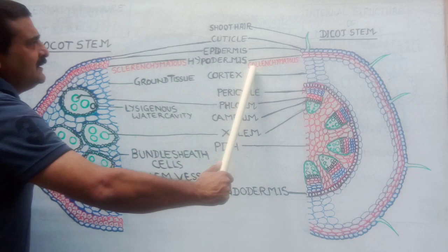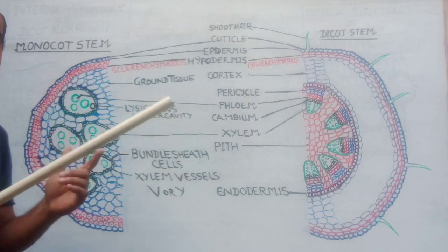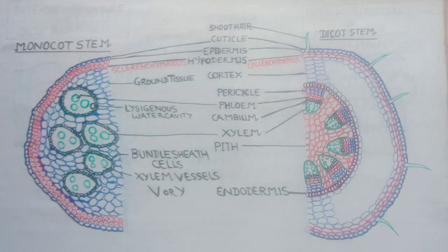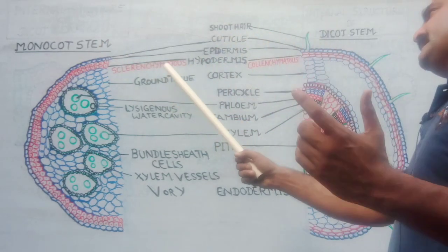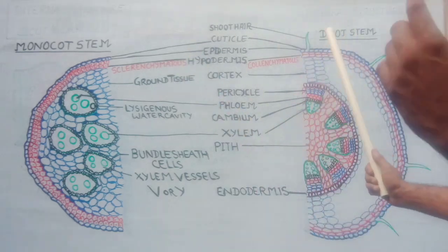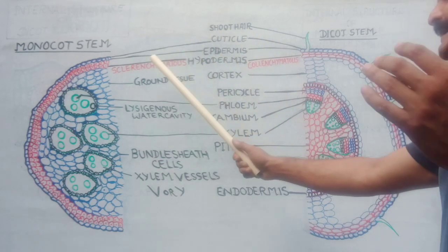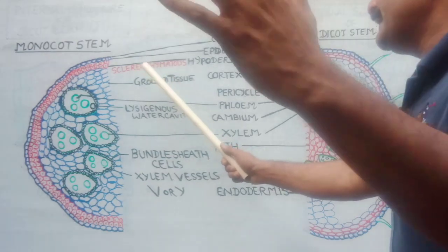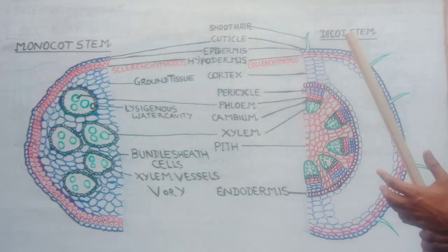Just below the epidermis is the hypodermis — an important exam question. The hypodermis of monocot consists of sclerenchymatous cells, whereas in case of dicot stem it is made of collenchymatous cells. Sclerenchyma is a mechanical tissue which is dead because the cell wall is lignified, while collenchyma is living tissue.